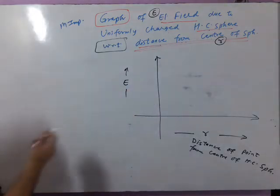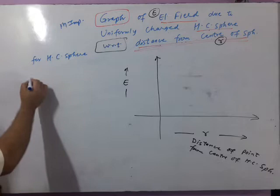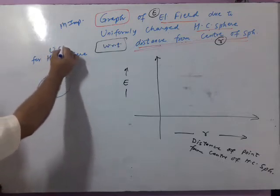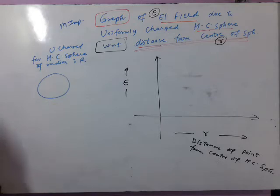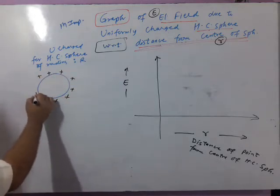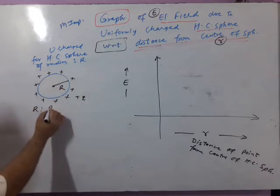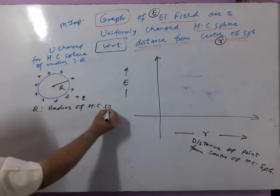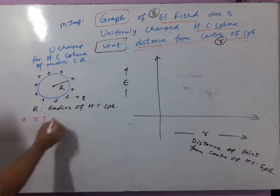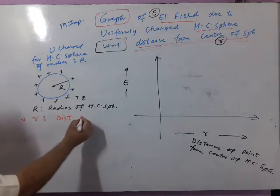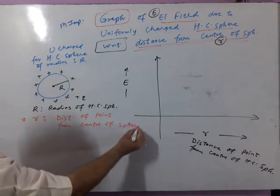In the derivation for a hollow conducting sphere, we consider a uniformly charged hollow conducting sphere of radius capital R, having charge plus Q. Capital R is the radius of the hollow conducting sphere. The main point: small r is the distance of the point from the center of the sphere — this is key for reasoning and numerical problems.